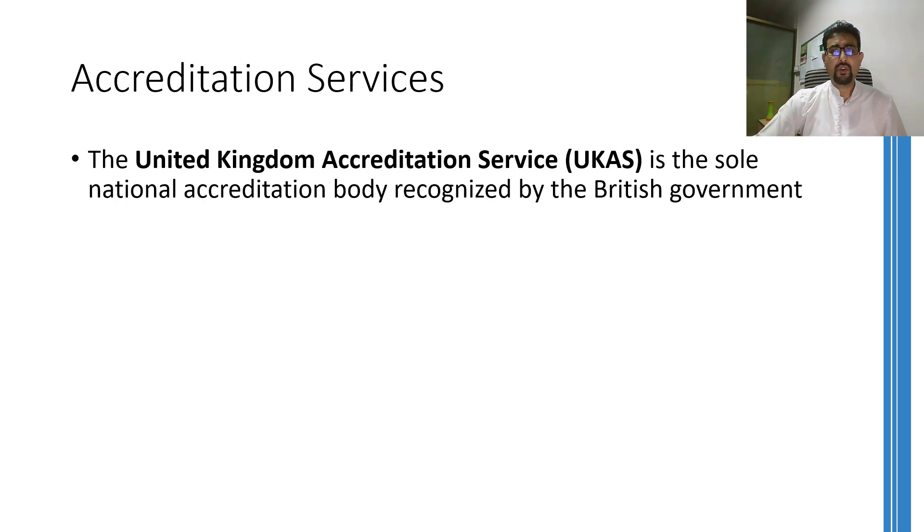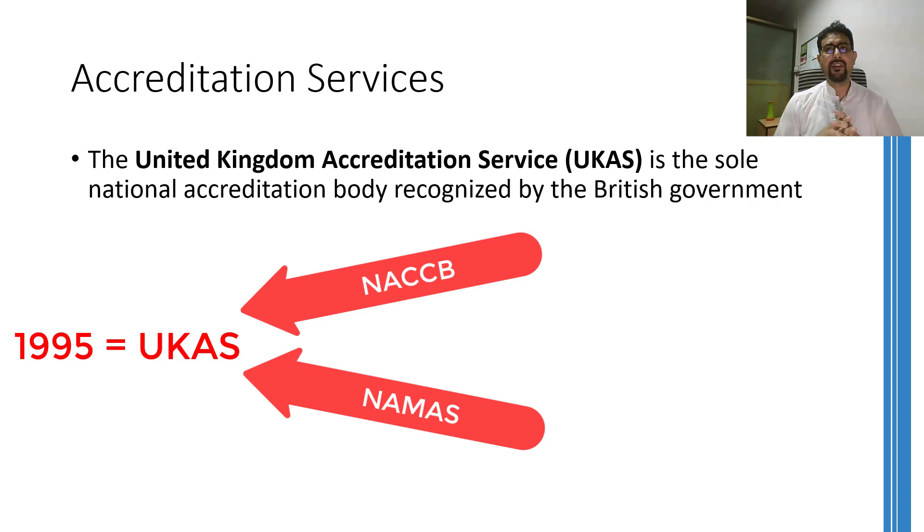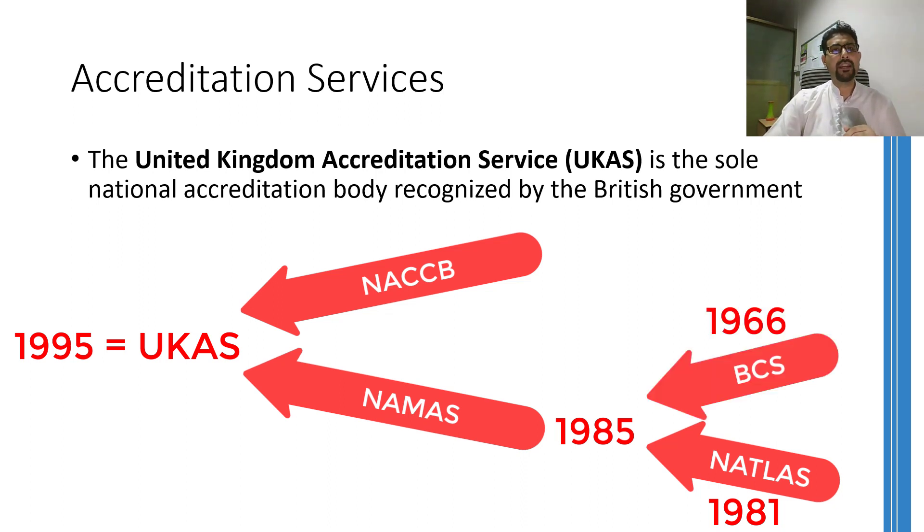In the UK, the United Kingdom Accreditation Service or UKAS represents the sole national accreditation body that is recognized by the British government. It was established in 1995 through a merger of National Measurement Accreditation Service and National Accreditation Council for Certification Bodies. The National Measurement Accreditation Service was itself a result of a merger in 1985 of National Testing Laboratory Accreditation Scheme that was established in 1981 and British Calibration Service that was formed in 1966. So if you have anything or if you want any type of standard or equipment to be calibrated or to be defined, this is the accreditation service that must be contacted. There are various standard laboratories that have been certified from UKAS and they can help you in getting your instruments calibrated.